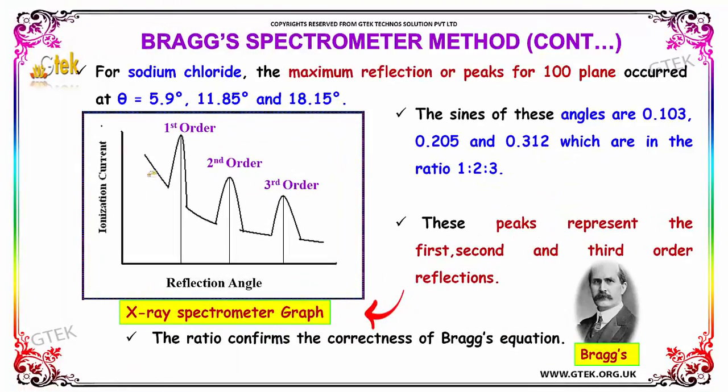For sodium chloride, the maximum reflection for 100 plane occurred at theta equal to 5.9 degrees, 11.85 degrees, and 18.15 degrees.